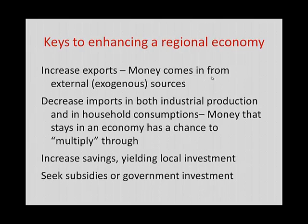In the short run, we increase our economy by increasing our exports, because money is coming in from external sources. By increasing exports — usually through the attraction of a manufacturing industry — we increase the amount of money coming in from the outside and increase local employment producing for an external consumption source. Another way for an economy to increase is to decrease imports through localized production, so that money stays in our economy. We call this import substitution.